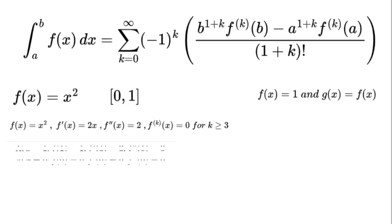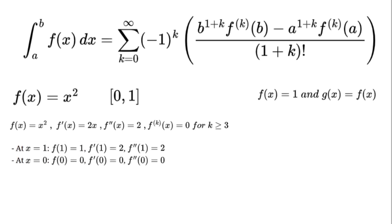At x equals 1: f(1) equals 1, f prime(1) equals 2, f double prime(1) equals 2. At x equals 0: f(0) equals 0, f prime(0) equals 0, f double prime(0) equals 0.